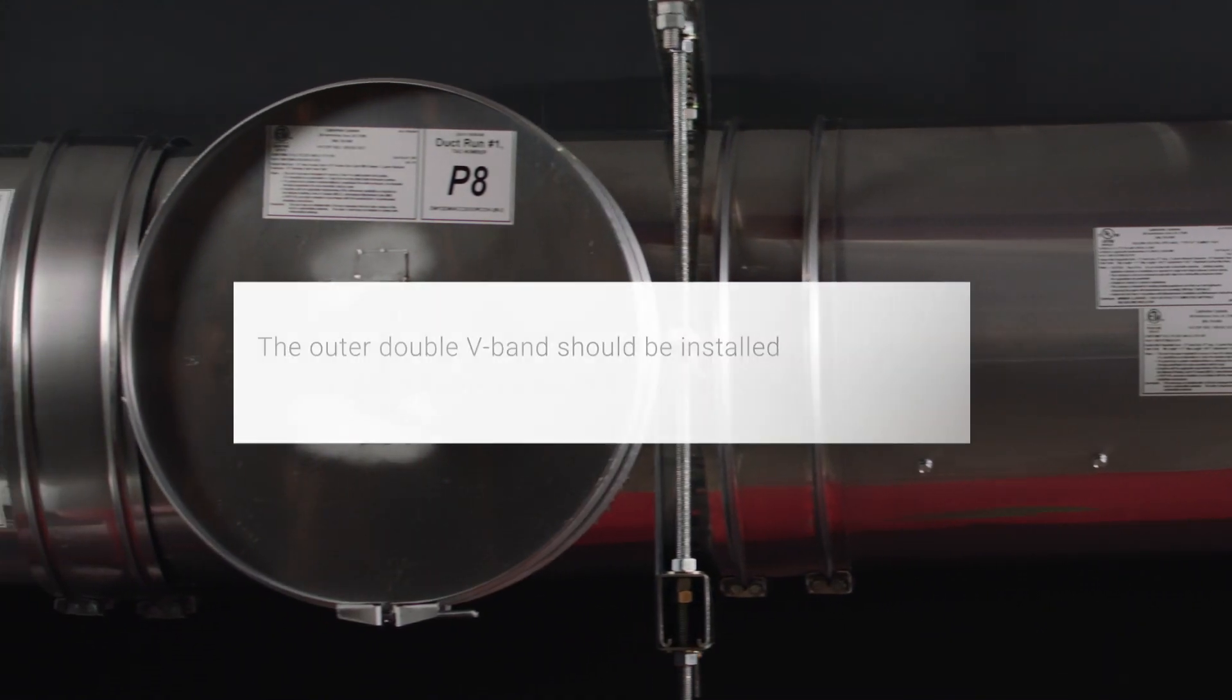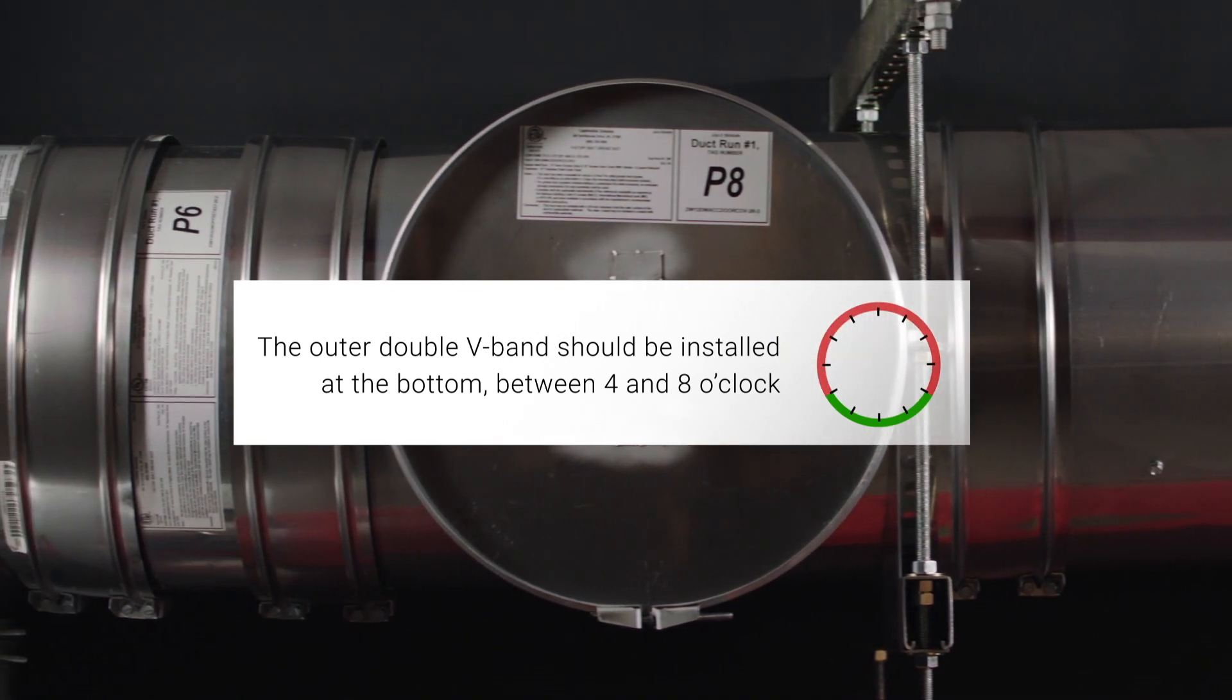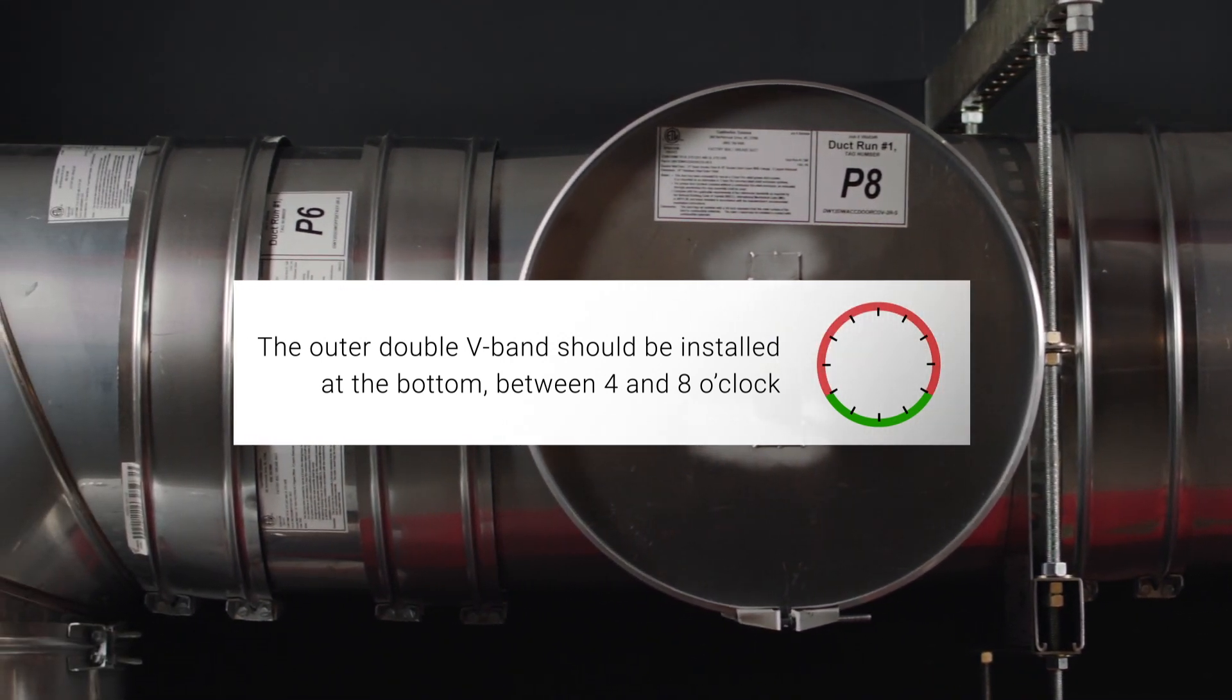If the duct is mounted outside, outer V-bands must be installed with the joint facing down to shed rainwater.